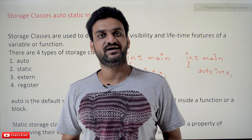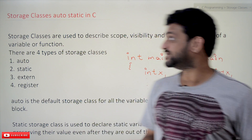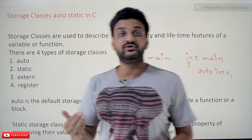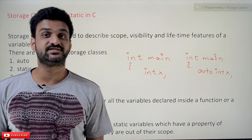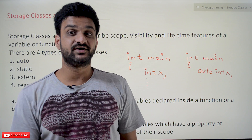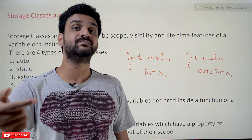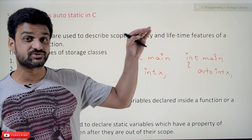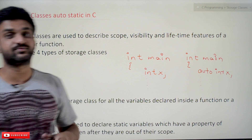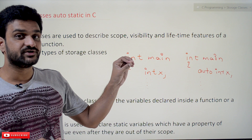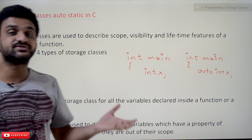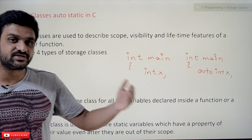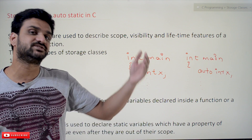Hi, welcome to Learning Monkey. I'm Vikram. In this class we'll try to understand storage classes: auto and static in C. The concept of scope of variables has already been discussed in our previous videos, where we discussed that any variable declared in a program has two scopes: block scope and global scope. Every video in our channel is part of a course or playlist — our suggestion is to follow the entire course for better understanding. The link for the playlist is provided in the description below.